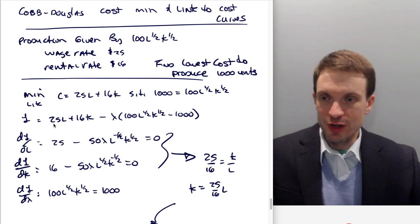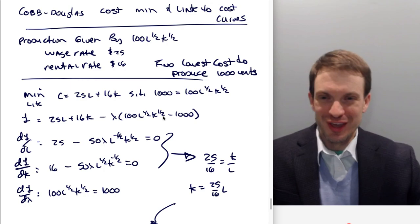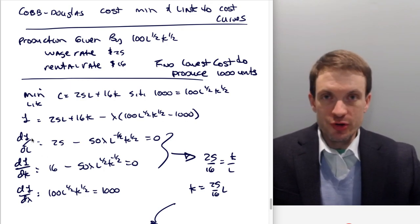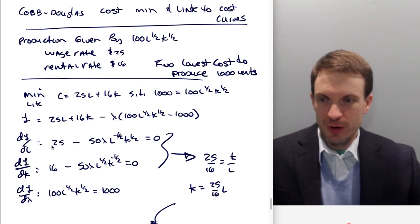So the Lagrangian is going to be 25L plus 16K minus lambda times the quantity 100 L to the half times K to the half minus 1000. Then taking our partials, right? So our Lagrangian, we're going to take a partial with respect to each of the variables: L, K, and lambda. This is going to give me 25 minus 50 lambda L to the minus one half K to the half equals zero.